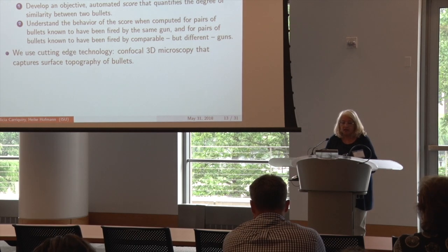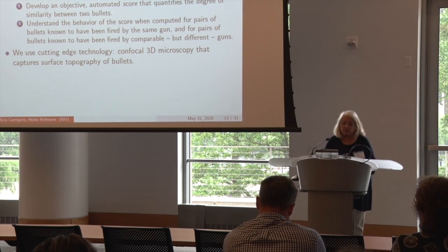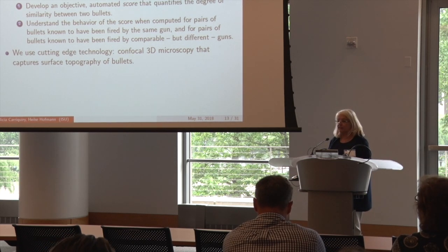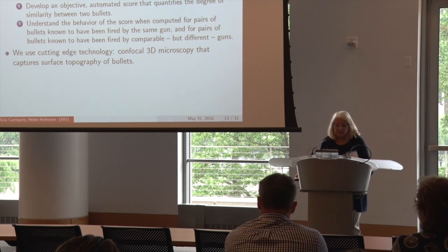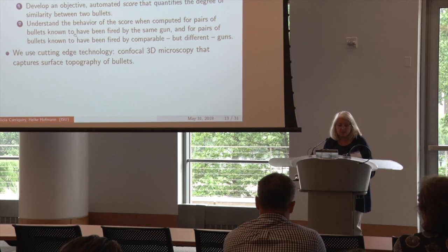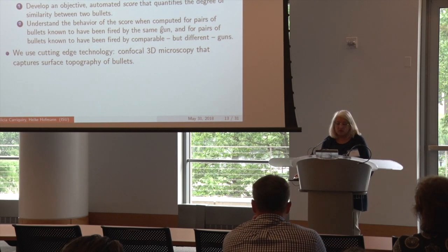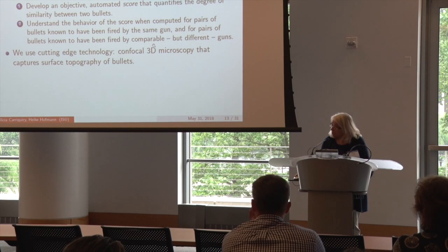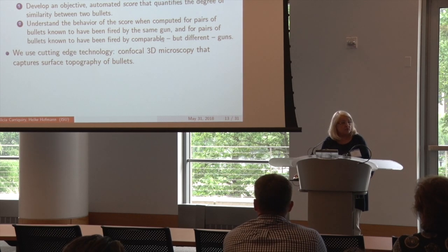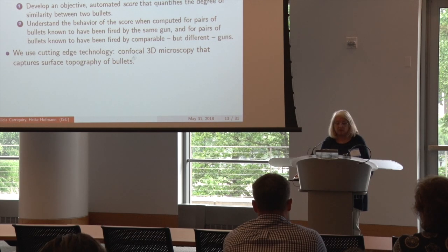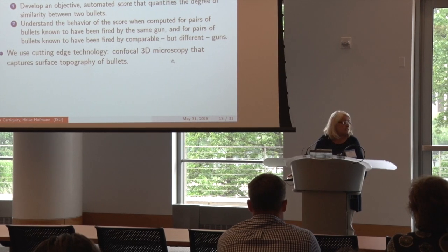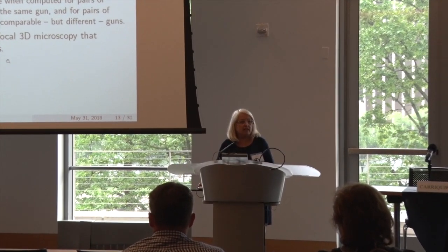What we want to do is come up with a comparison criterion that is objective, defensible, and scientifically valid. We want to develop a score that quantifies the similarity between two bullets, and understand what the behavior of that score is for known same-gun pairs versus known different-gun pairs. The data we use is the surface topology from confocal three-dimensional microscopes. The FBI has those, NIST has those, and the DFSC has these. I predict that in four or five years this will be best practice.